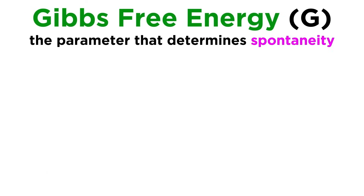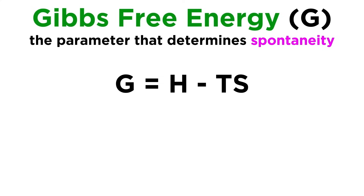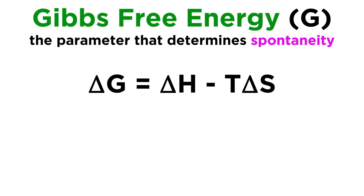But we want to be able to confidently predict whether any process is spontaneous or not, so we need to combine enthalpy and entropy to get another thermodynamic quantity — Gibbs free energy, symbolized with a capital G. This is the parameter that will unequivocally predict whether a reaction is spontaneous, and it depends on enthalpy, entropy, and temperature, according to this equation. We typically measure changes in these values, so we can say that the change in Gibbs free energy over a particular process is equal to the change in enthalpy minus the temperature times the change in entropy: ΔG = ΔH - TΔS.